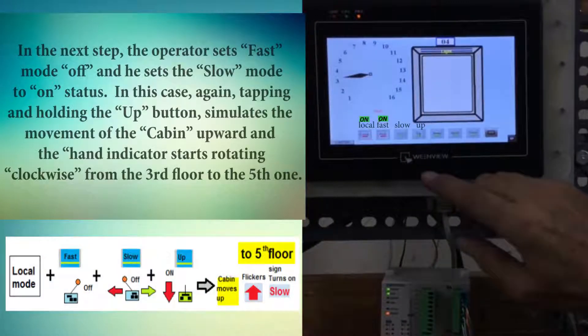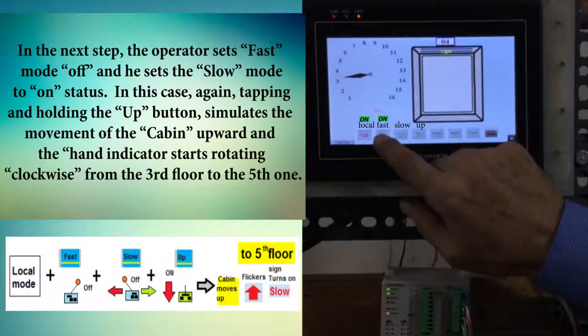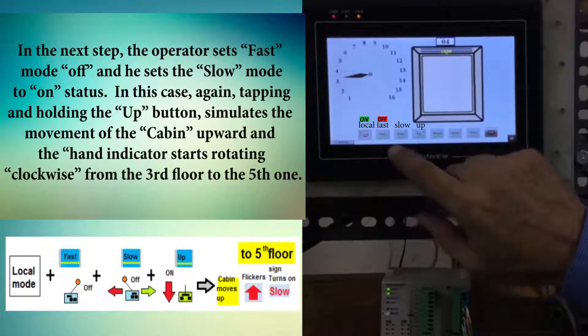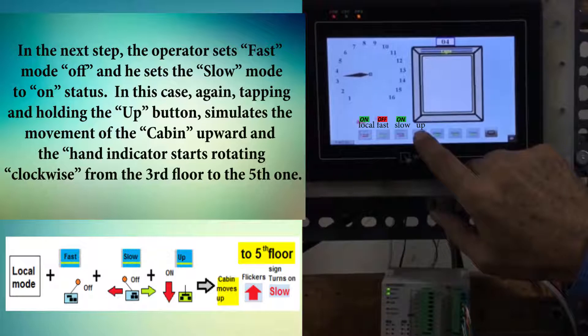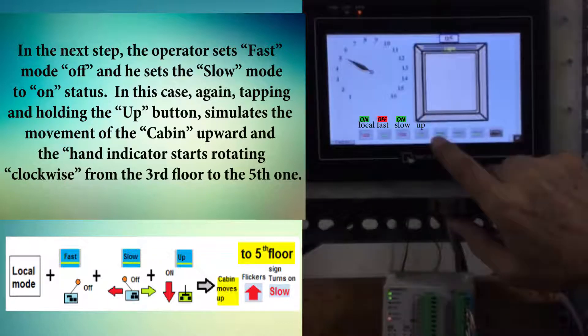In the next step, the operator sets fast mode off and sets the slow mode to on status. In this case, again tapping and holding the up button simulates the movement of the cabin upward, and the hand indicator starts rotating clockwise from the third floor to the fifth one.